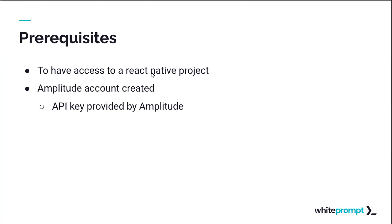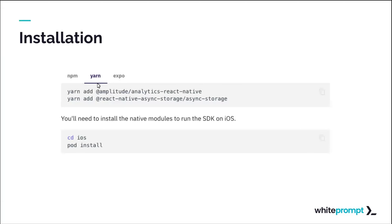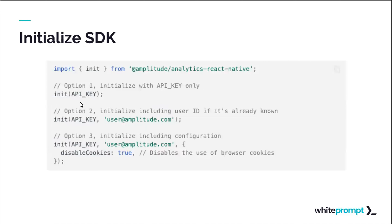For the React Native SDK prerequisites: you need access to a React Native project, an Amplitude account, and the API key provided by Amplitude. Using a package manager like Yarn, you add the analytics library, install another package for managing local storage in the app, install the pod for native modules on iOS, and then initialize the SDK using your API key.